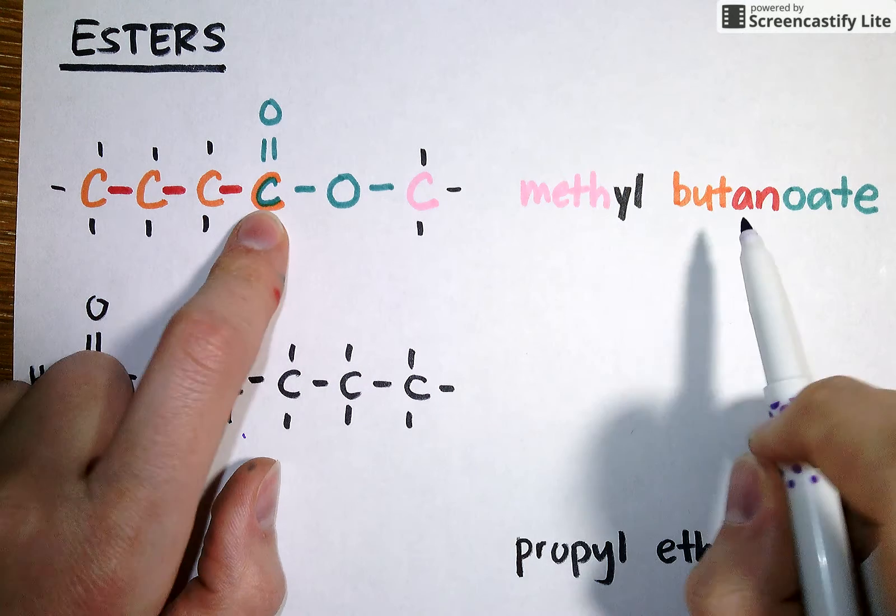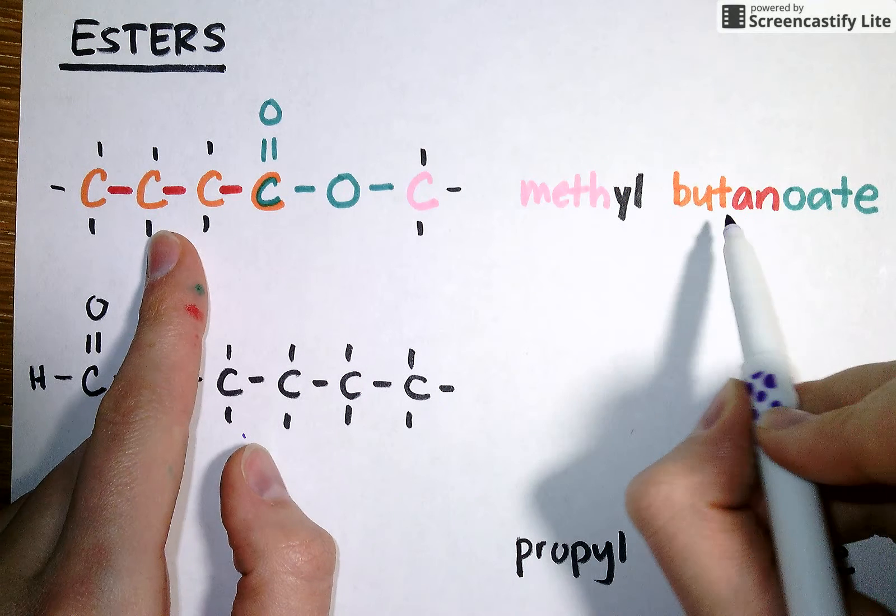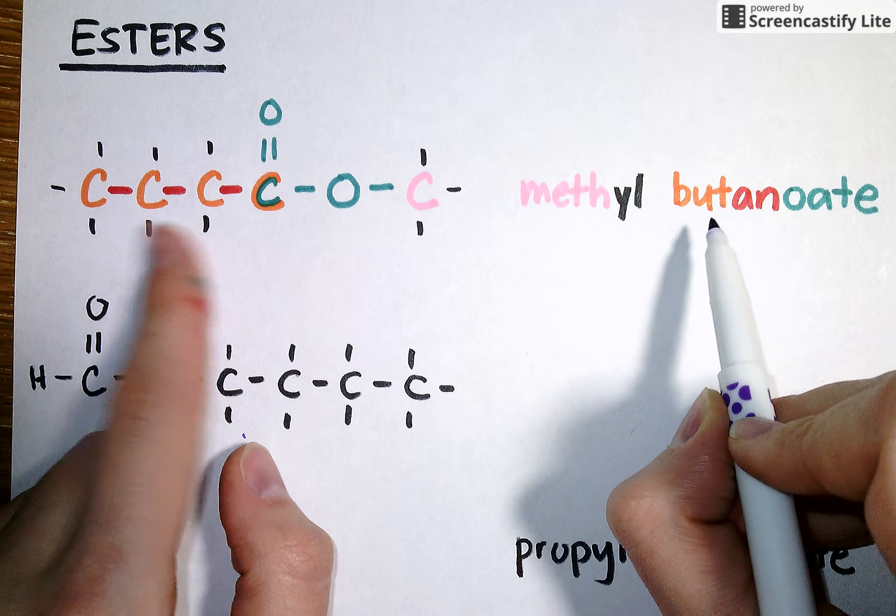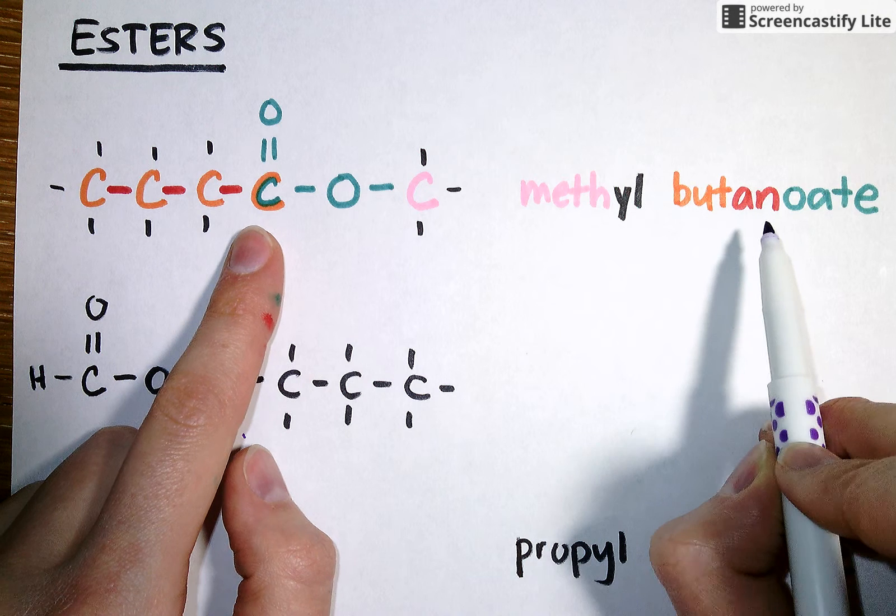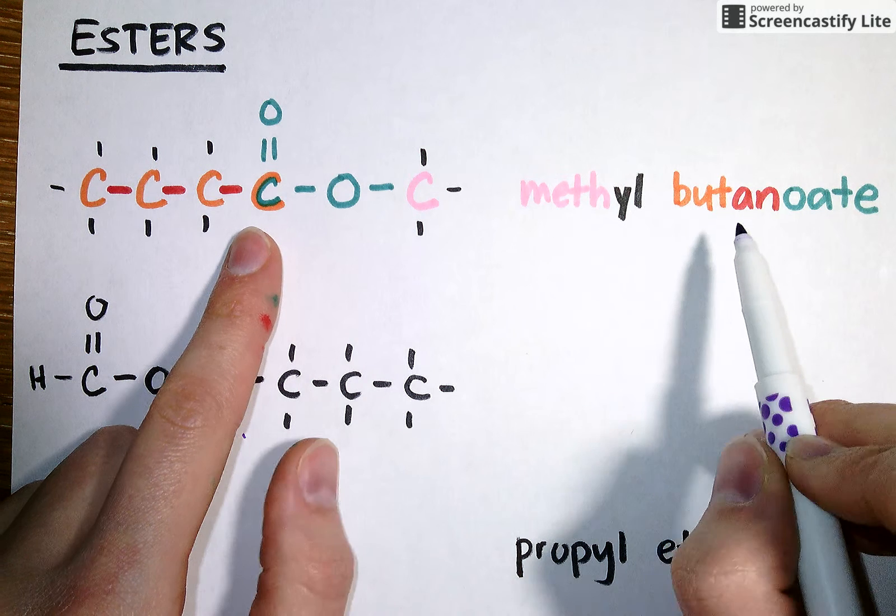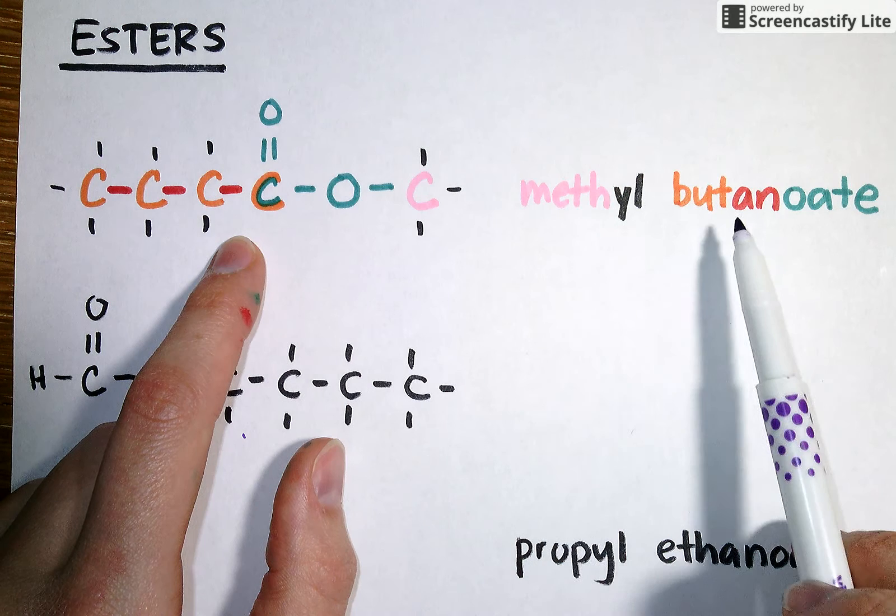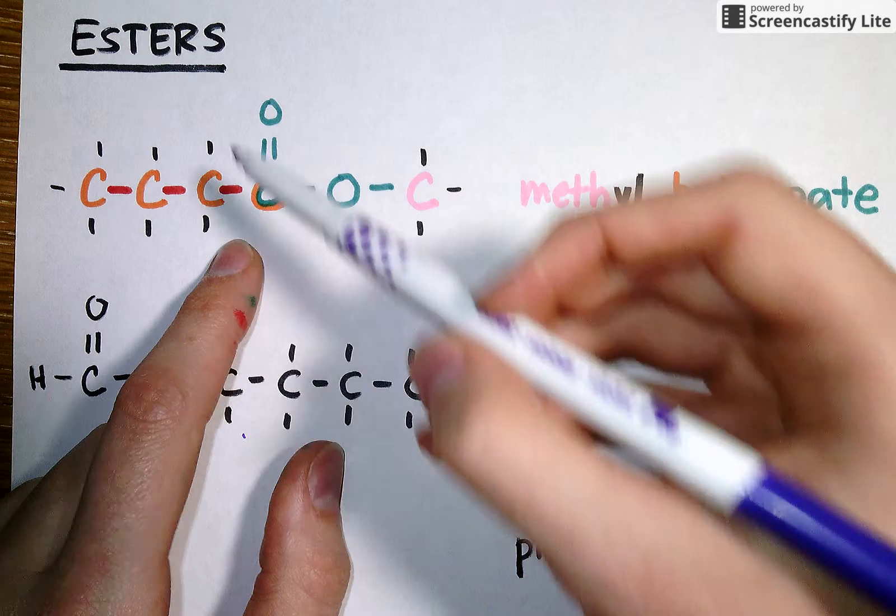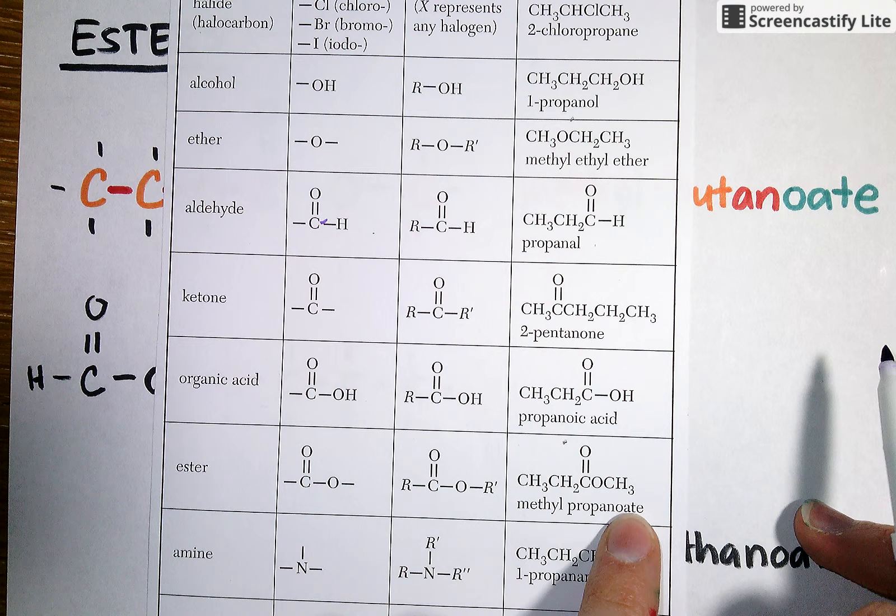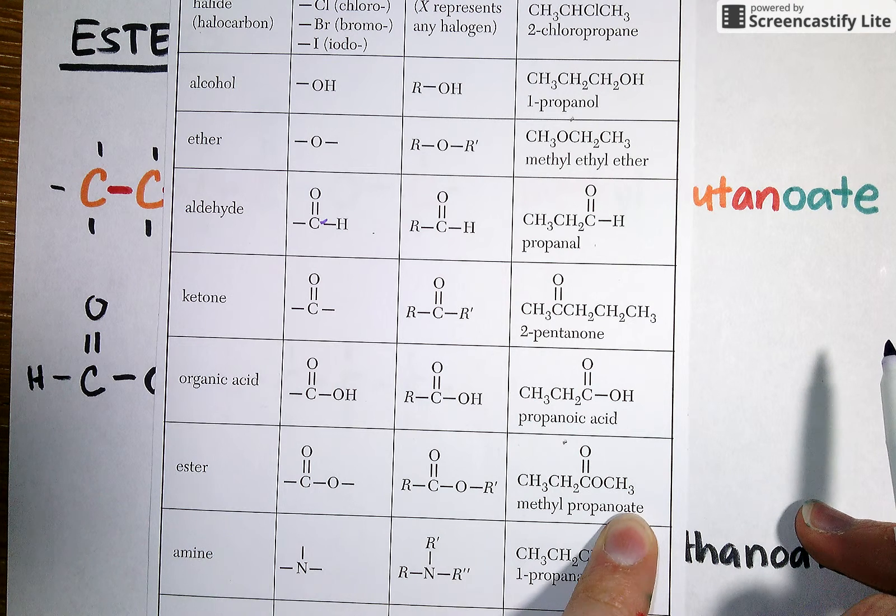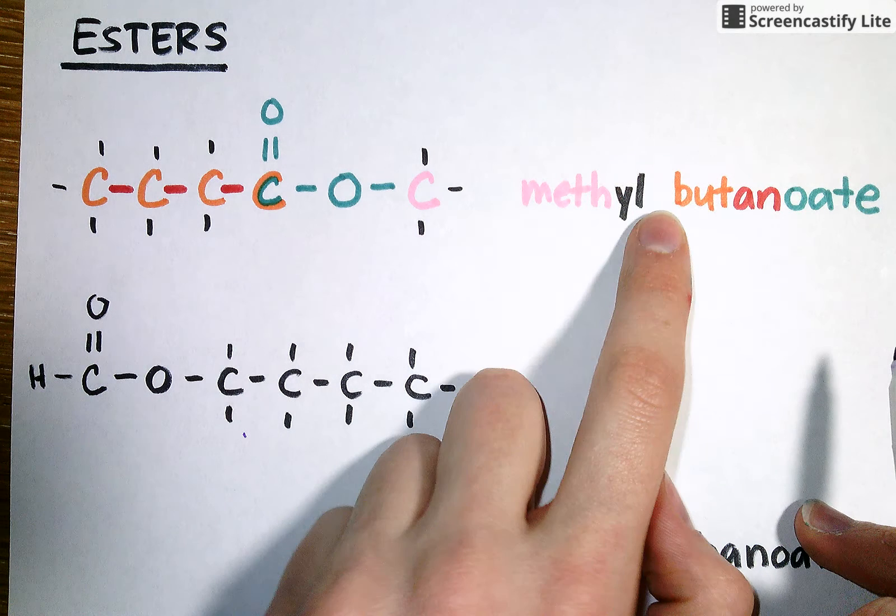My second part of the name comes from four carbons in a row. So I'm going to use the prefix but. Those four carbons are all connected by single bonds, so I'm going to use the an of the ane suffix. However, to show that it has this ester functional group breaking up the meth and the butane, I'm going to use the ending oate, which from table R is the ending that tells me I have an ester functional group around. So my end name for this molecule becomes methyl butanoate.